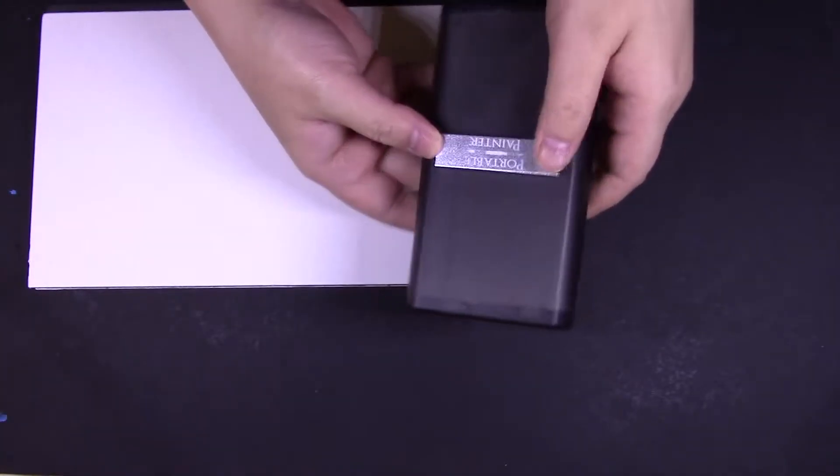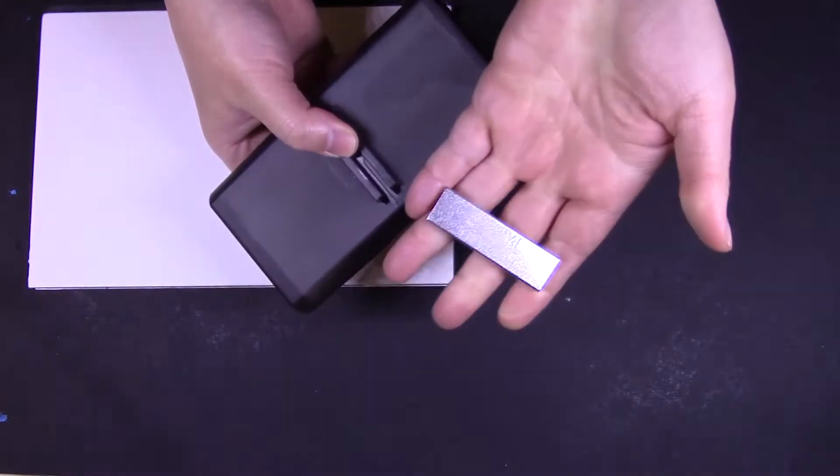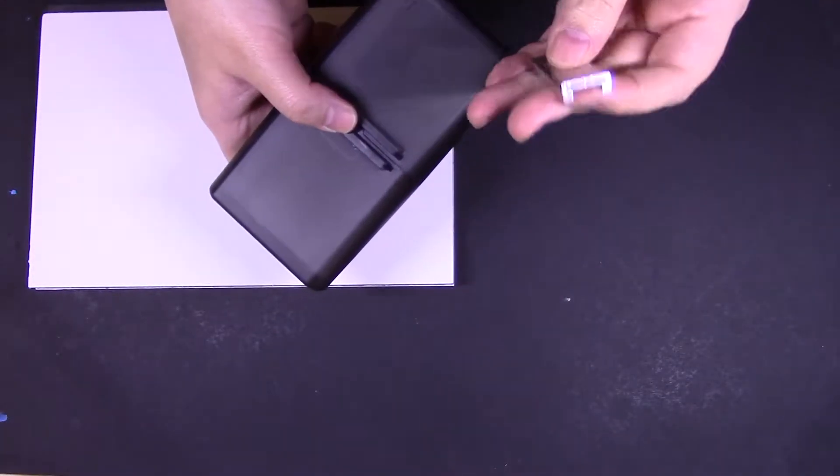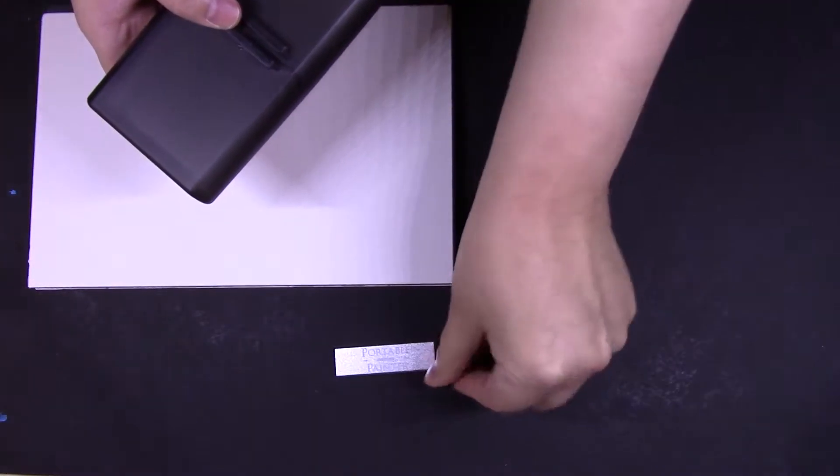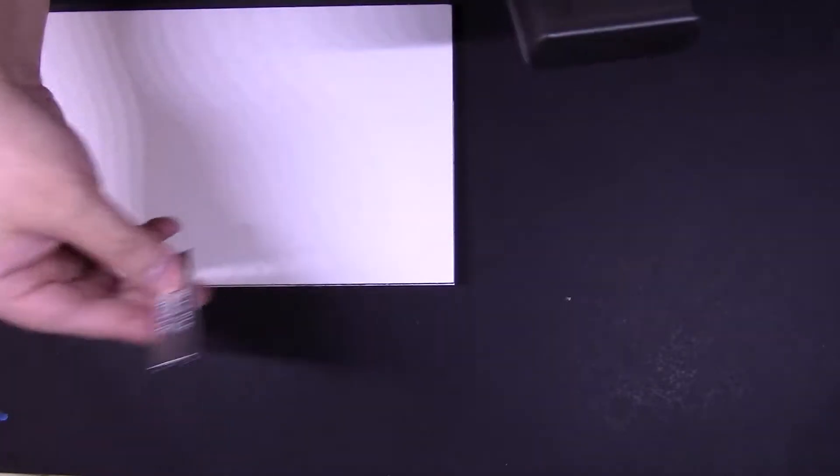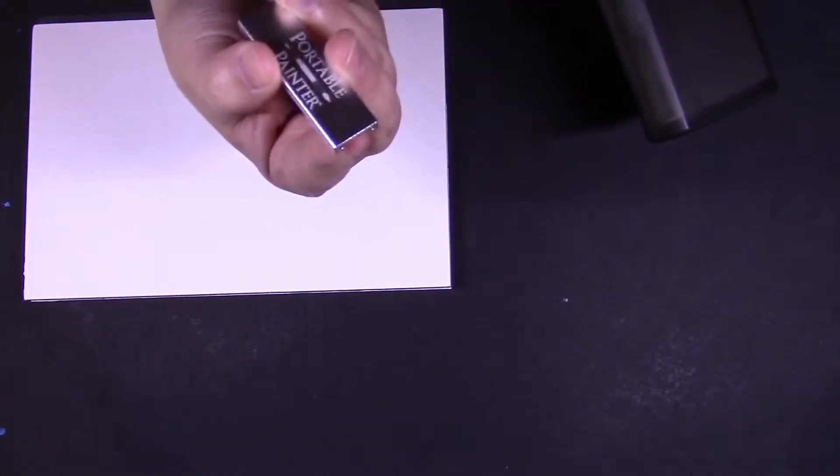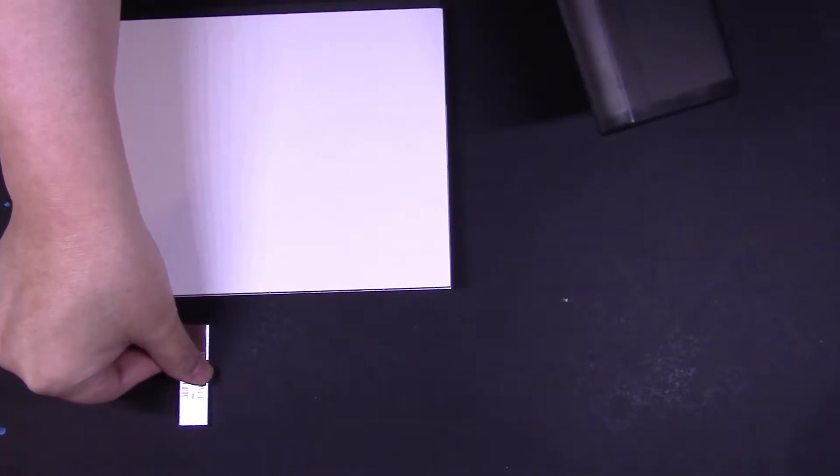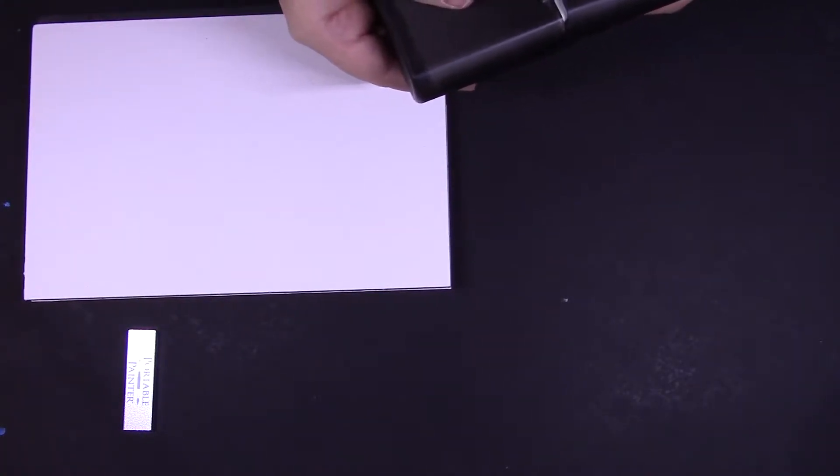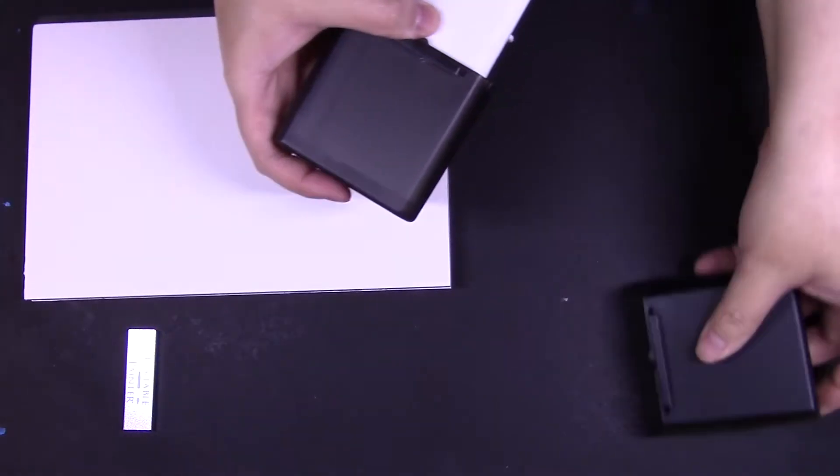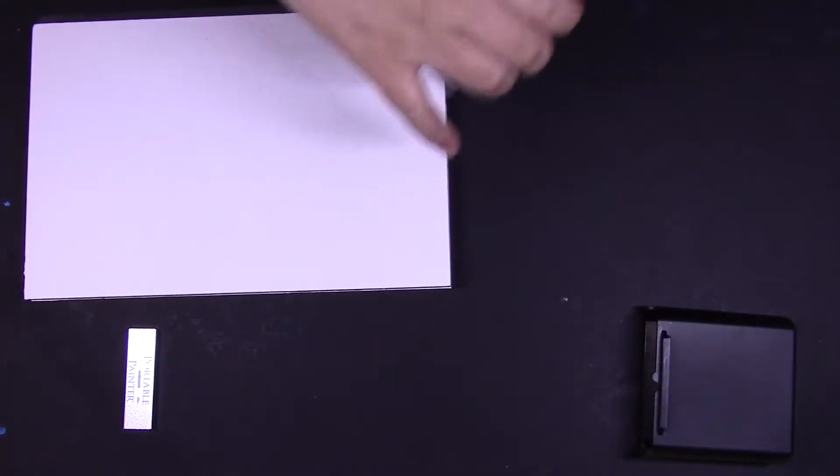First thing to note about the portable painter is that this little thing slides off. Now the downside is that this little thing can get lost. I did talk to them and they say they're going to have, once they get everything more set up, a little store where you can buy more of these and also buy the little pans, although Windsor and Newton sized pans will fit in here. Most other normal half pans will not.